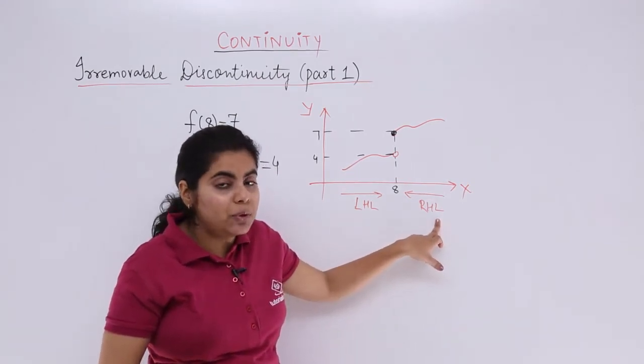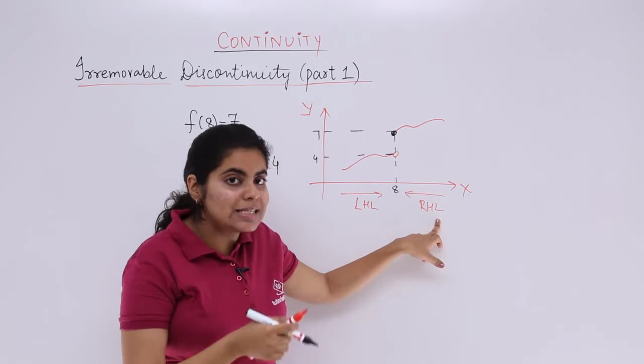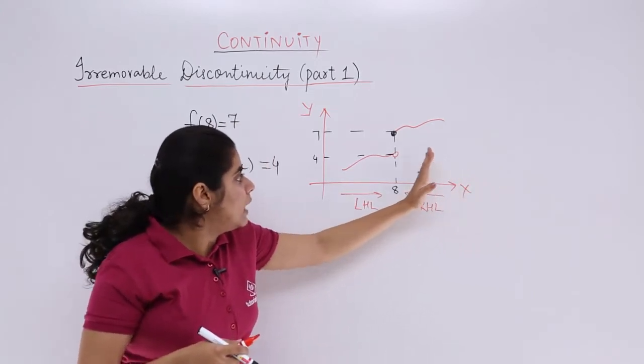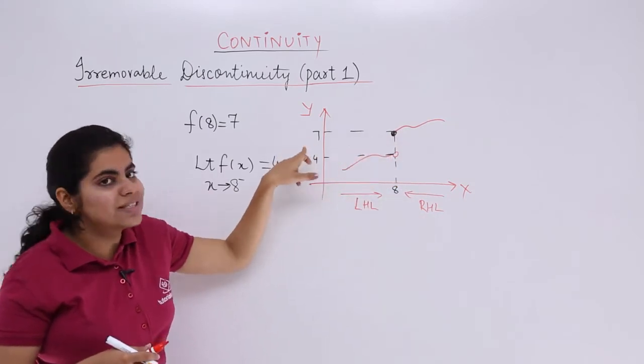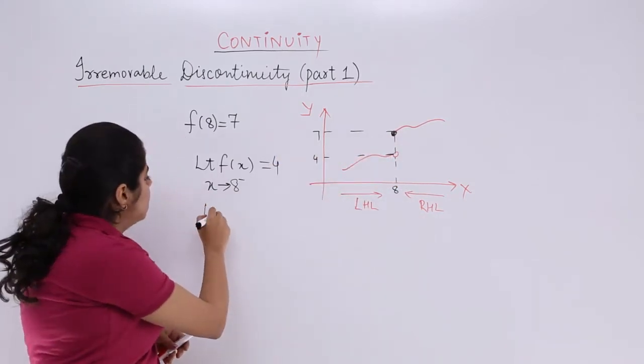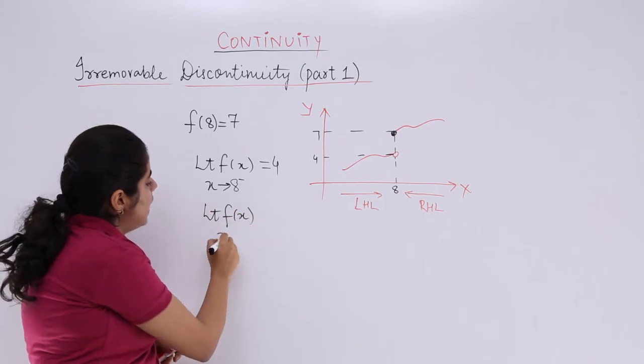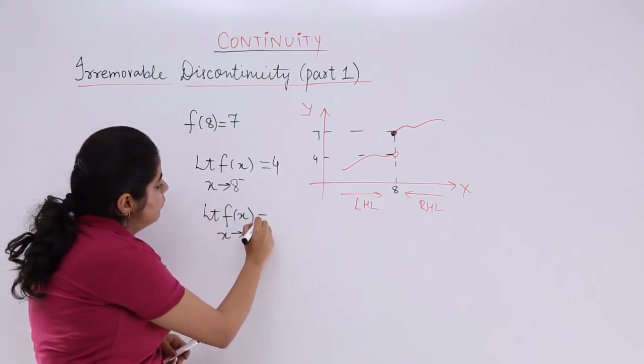What about moving and approaching from right-hand side to 8? You come from the right-hand side, you see the curve is here. Come from the right-hand side, coming, coming, coming, right here you get 7. So that means limit f(x), x tends to 8 plus will give me 7.